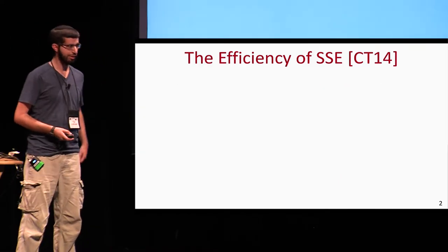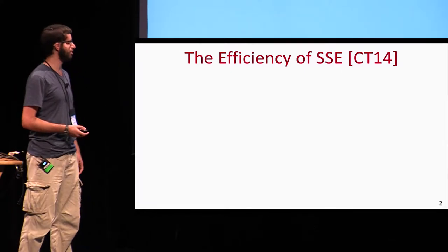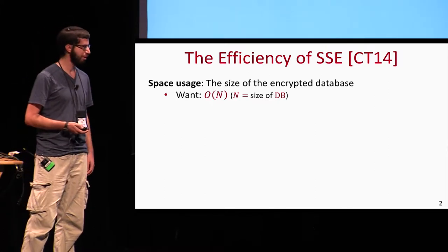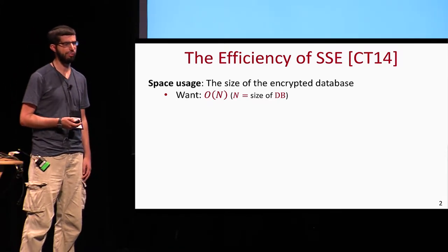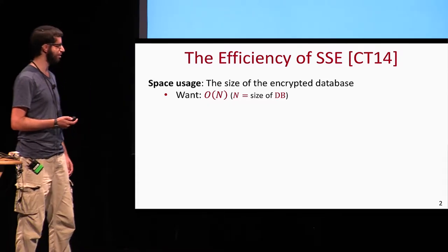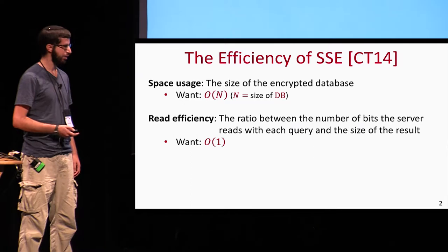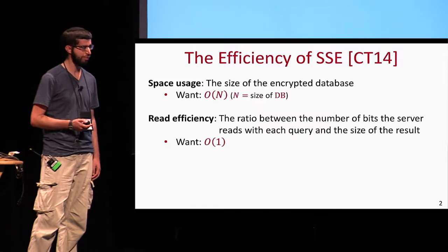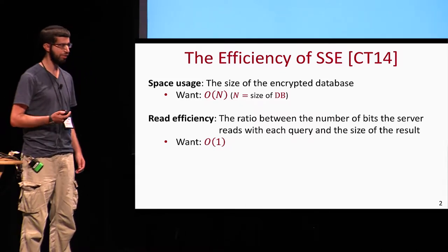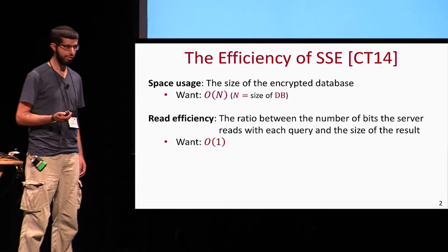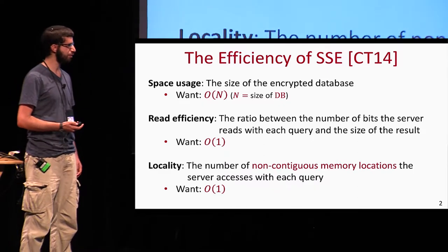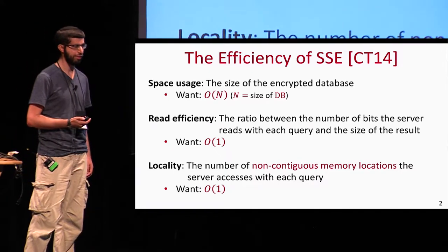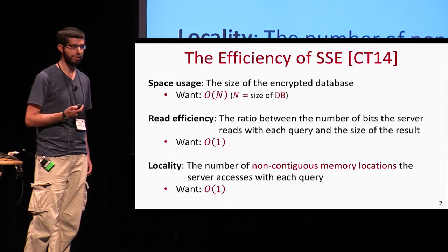Here's a reminder of the efficiency parameters we want to optimize in searchable symmetric encryption. There's the space usage of the scheme, which is the size of the encrypted database, and ideally we would like it to be O(N), where N is the size of the original database. There's the read efficiency, which is the ratio between the number of bits the server reads with each query and the actual size of the result — ideally a constant ratio. And there's the locality, which is the number of non-contiguous memory locations the server accesses with each query — ideally a constant number.